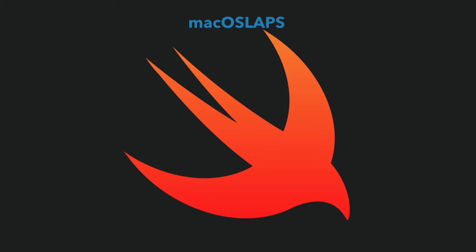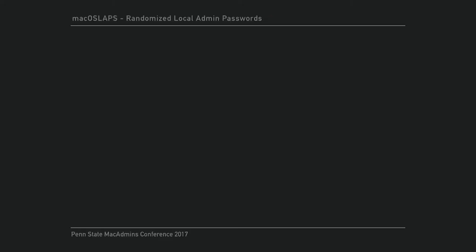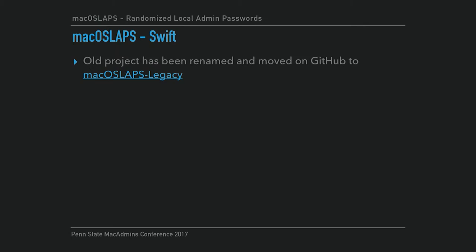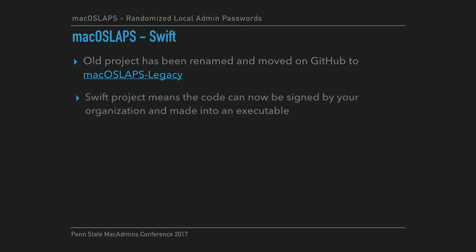Just in the past month, I decided to rewrite macOS LAPS in Swift. The old project has been renamed and moved — I recommend using the older project if you have 10.9 or below clients, as I haven't tested the Swift version on anything below 10.10. One of the biggest things our organization is excited about is that we can sign this code, so it can't be modified — it'll be a signed application.